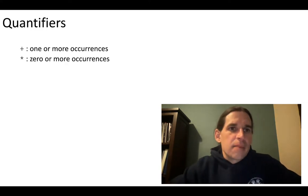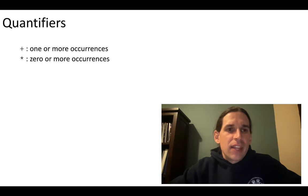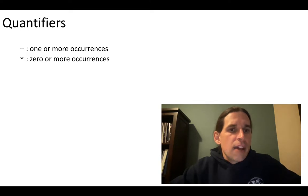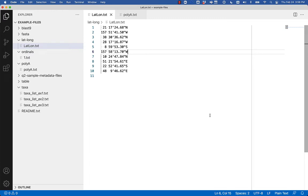The other thing we talked about last time was quantifiers — specifically the plus quantifier, which indicates one or more occurrences. So for example, \w+ would match any letter or number and one or more occurrences of that. The other quantifier we'll look at today is the asterisk or star character, which matches zero or more occurrences of the character or character set preceding it. That was a lot of new features — let's jump in and work with some files.